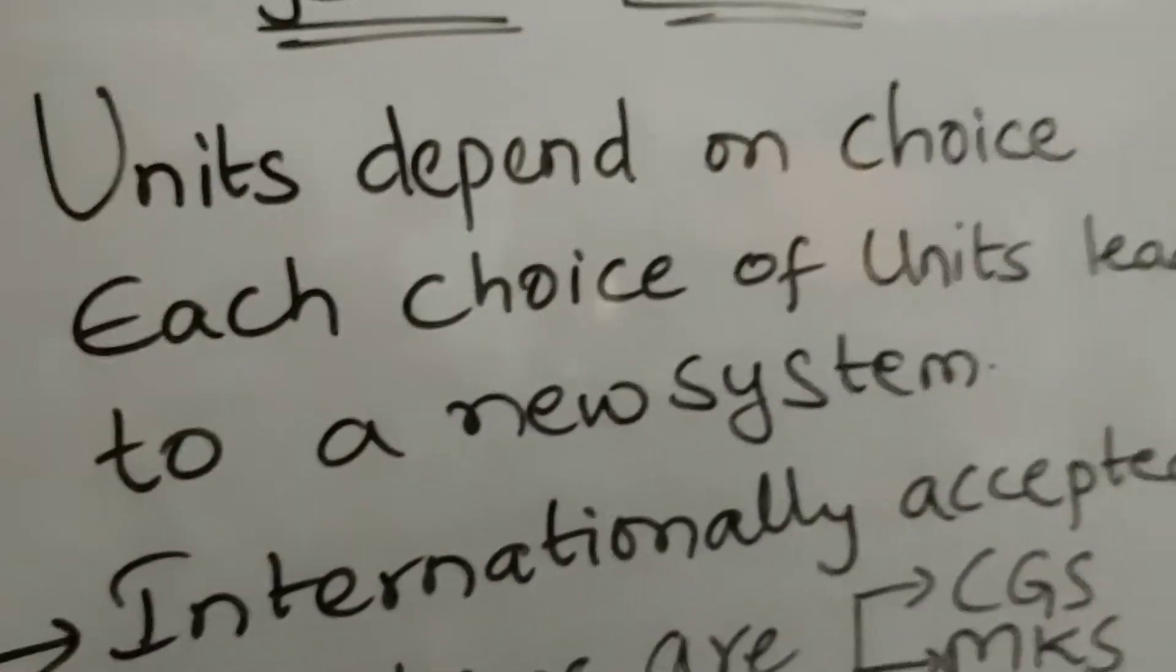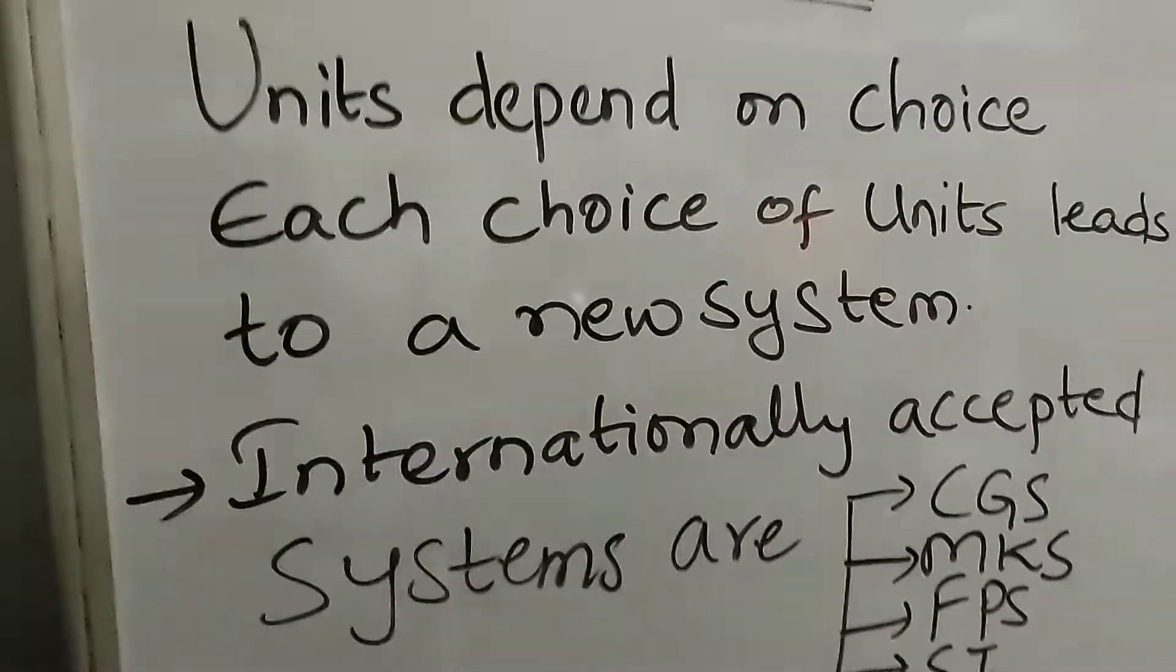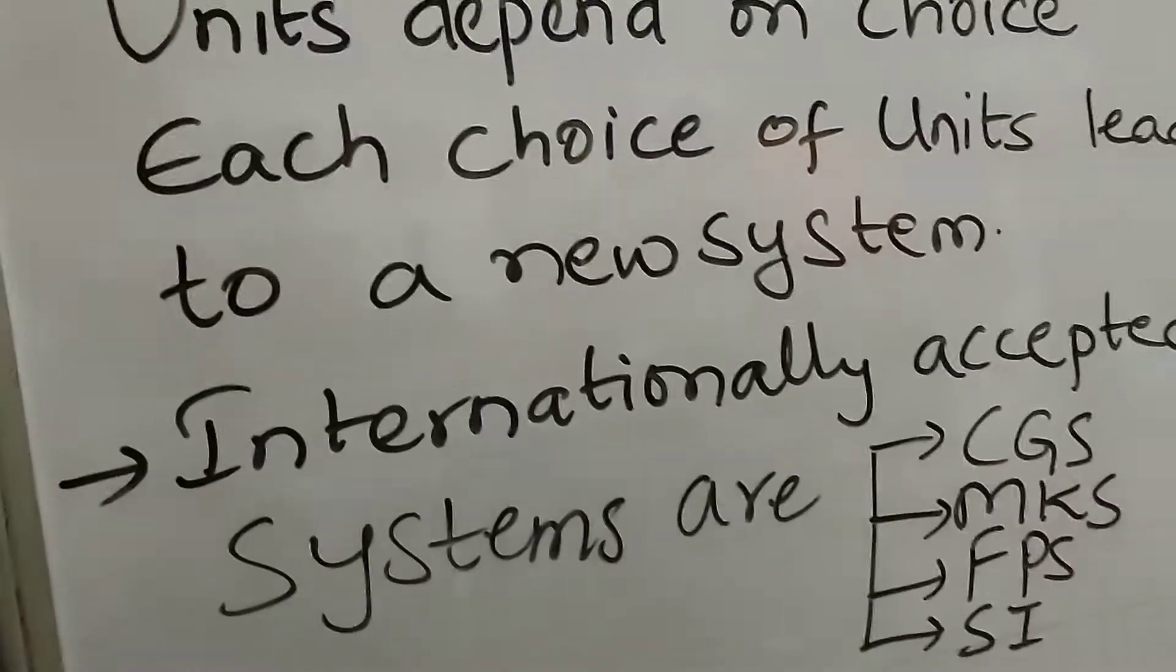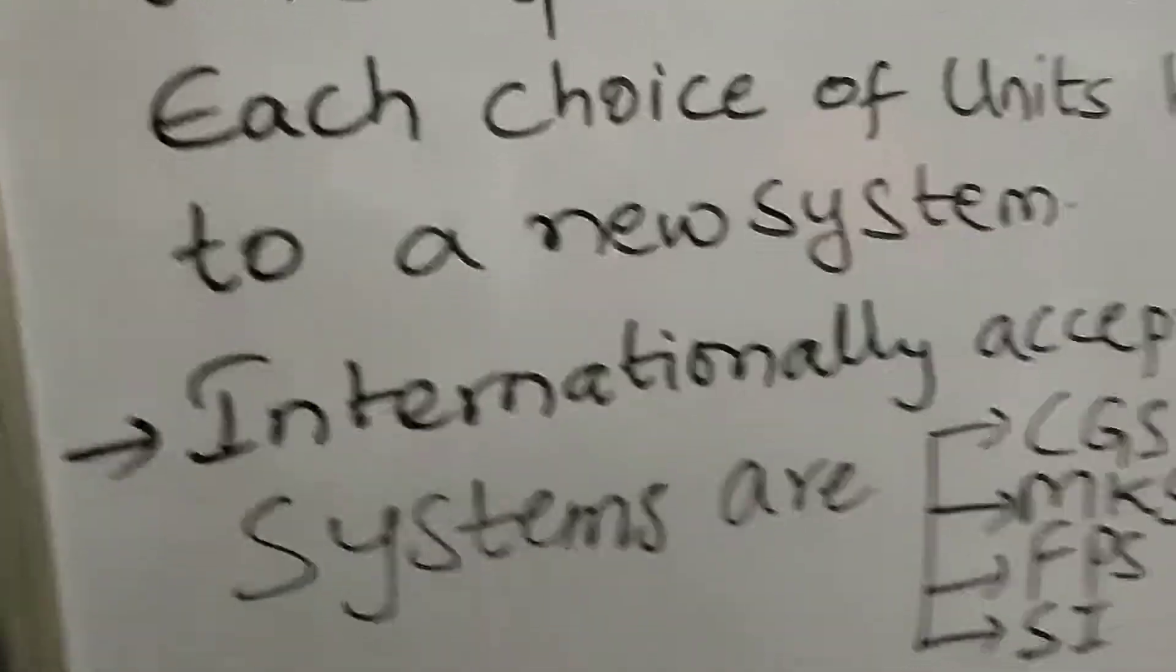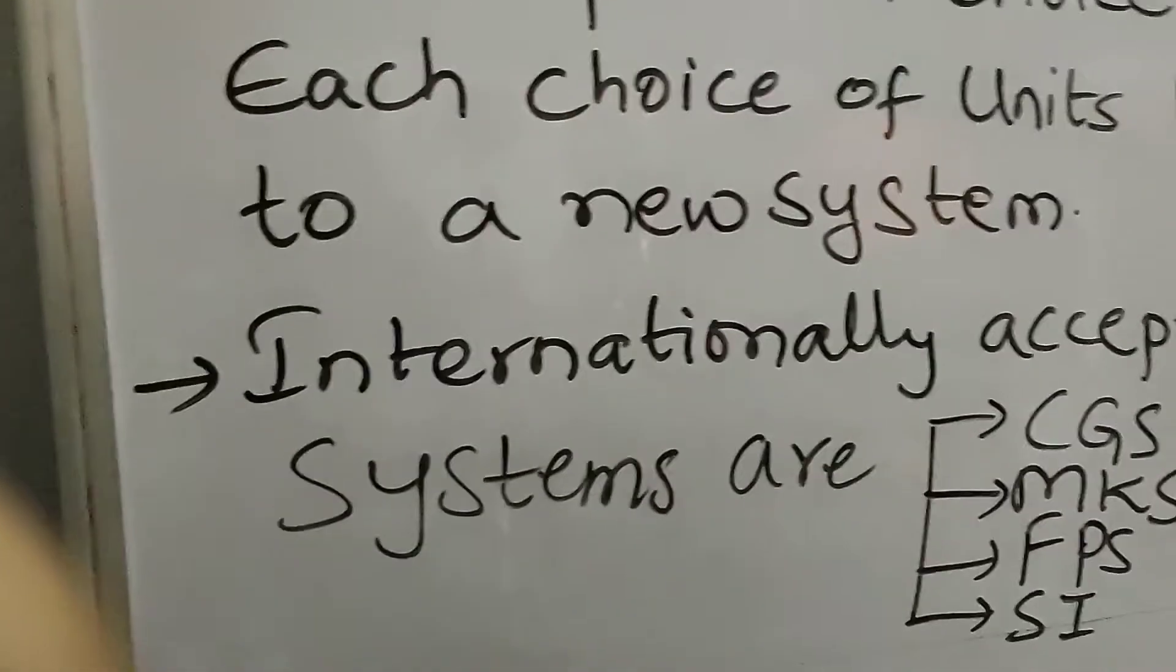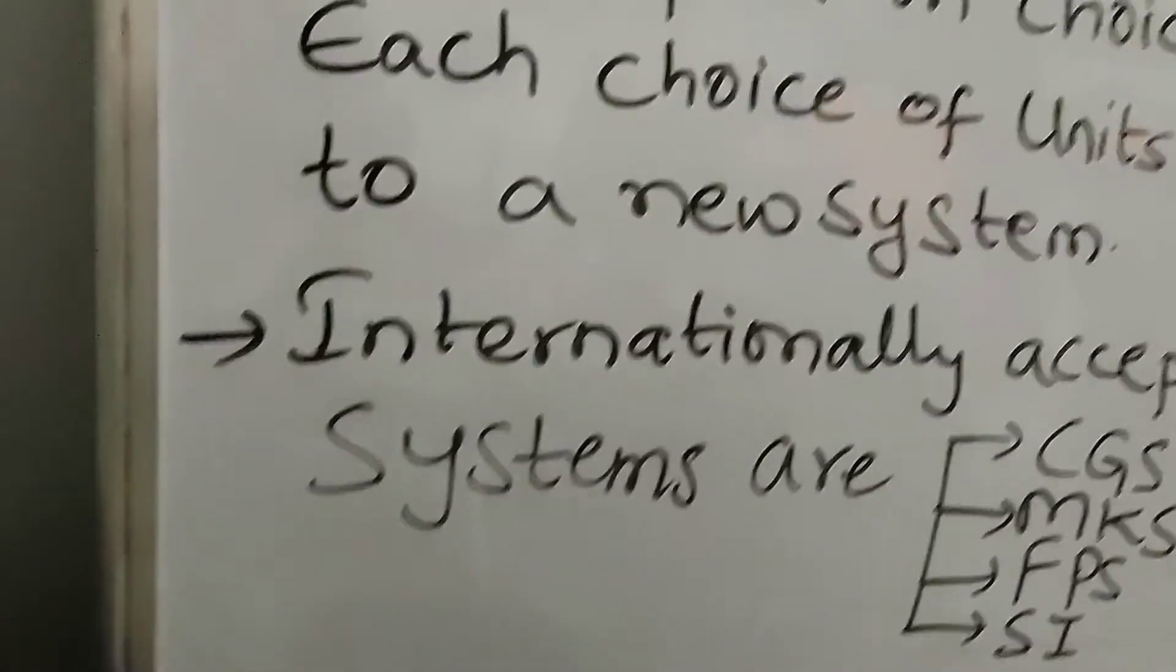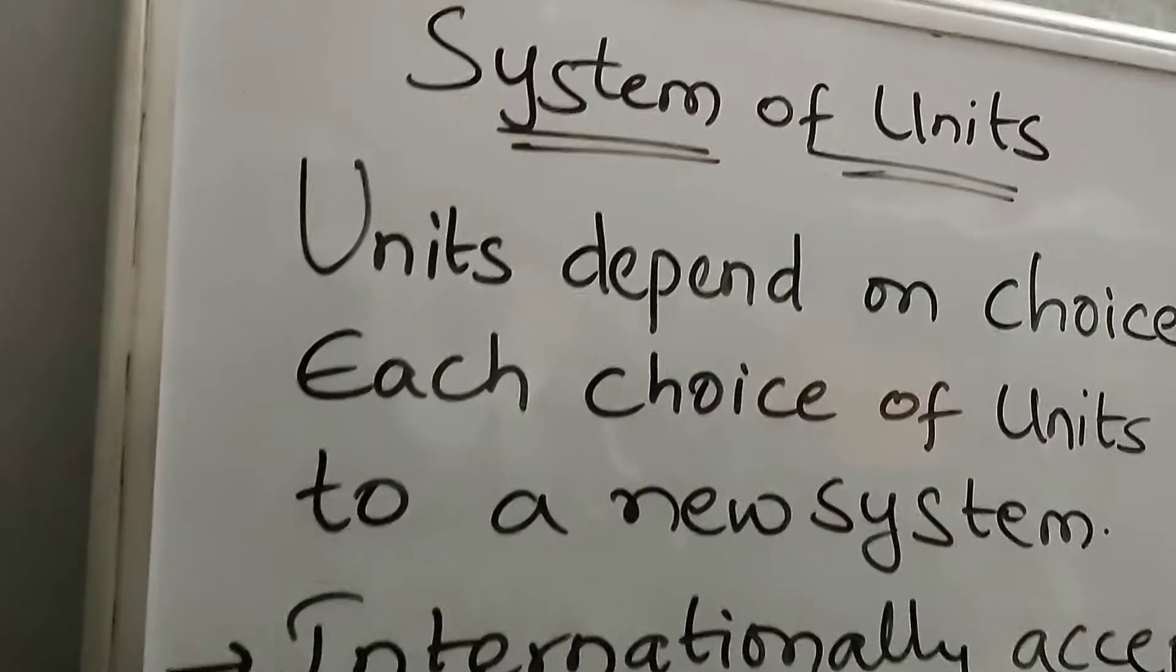System of units depends on choice, so each choice of units leads to a new system. Internationally accepted systems are four: CGS, MKS, FPS, and SI. These are four systems accepted internationally. In further classes, I will tell you